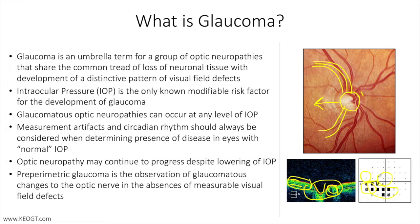In the distant past, glaucoma was thought to be a disease of elevated pressure in the eye, or intraocular pressure. However, we now know that glaucoma can happen at what was thought to be normal pressure — basically between 10 and 21 millimeters of mercury — and we no longer use IOP as part of our definition of glaucoma. Still, intraocular pressure is an important risk factor for glaucoma and is the only modifiable risk factor that we can do something about.